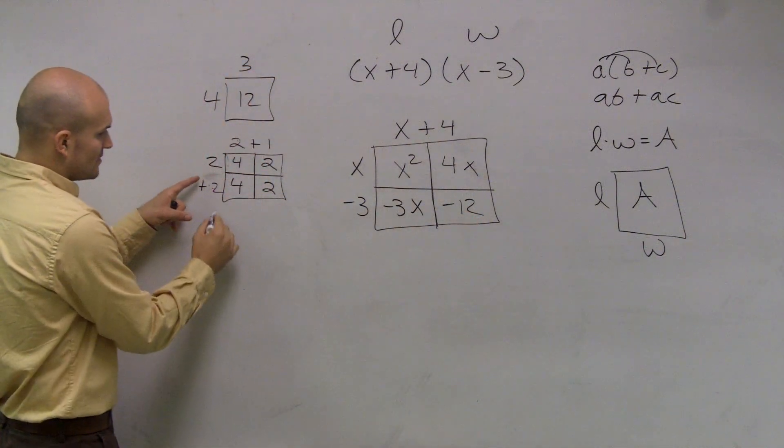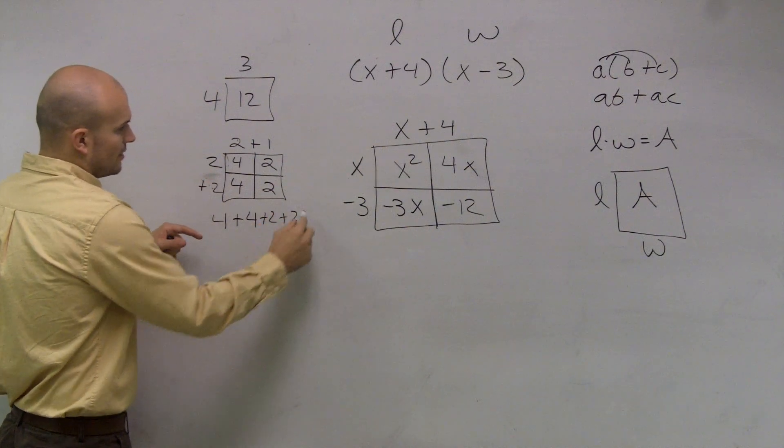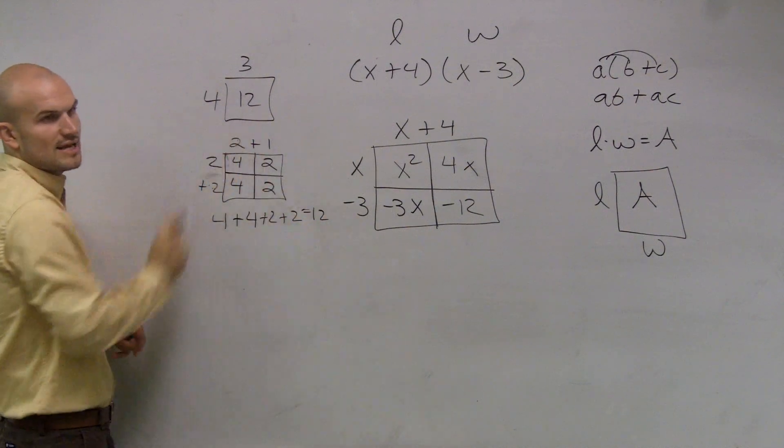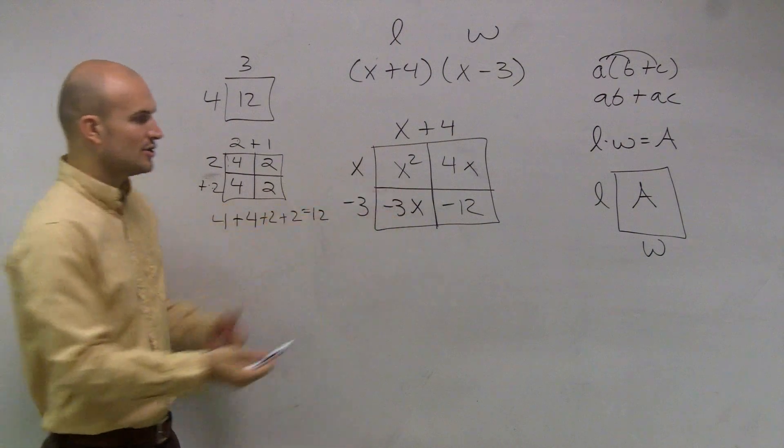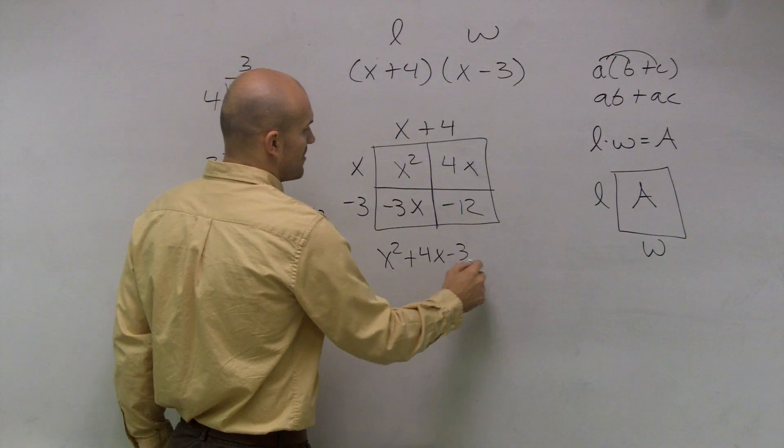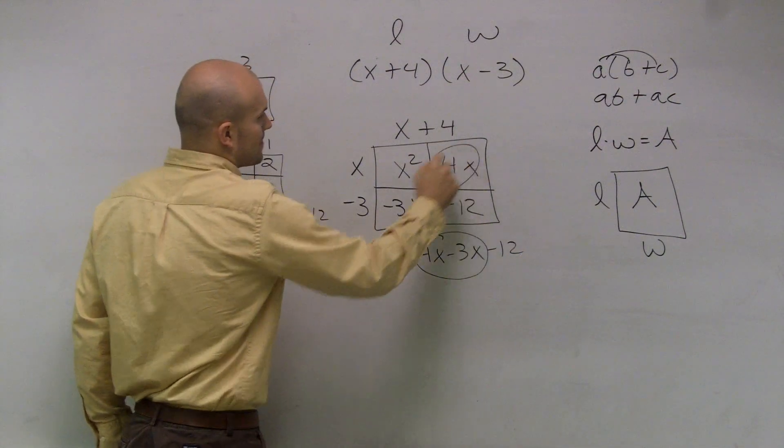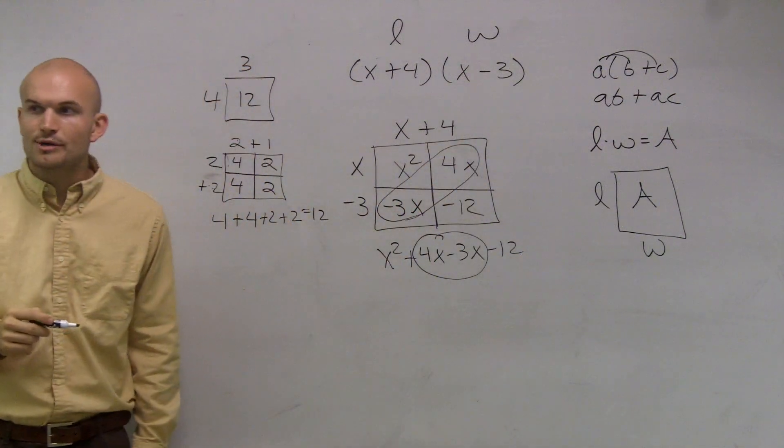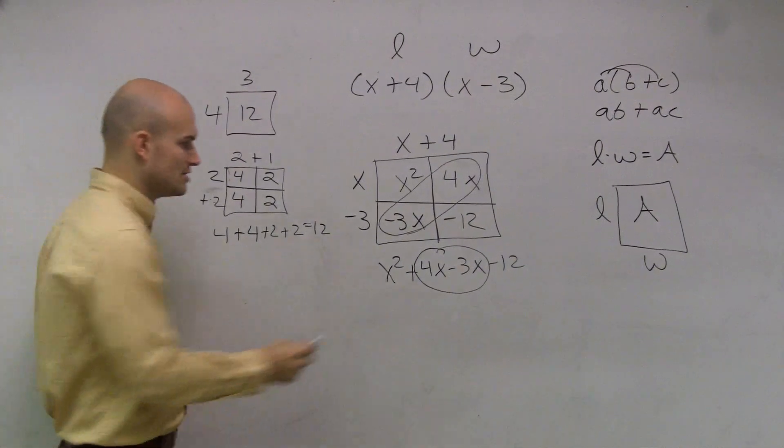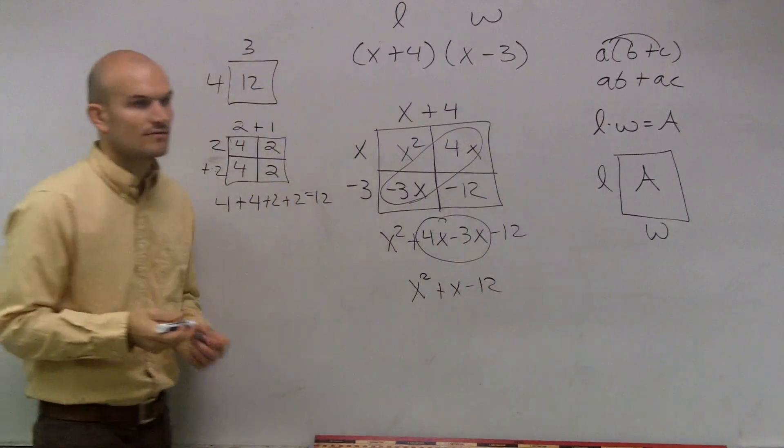And then here what I did was I added all these up. 4 plus 4 plus 2 plus 2. And that equals 12, which is the same as this. Well, here you're going to do the same thing. x squared plus 4x minus 3x minus 12. Where we notice that those two terms combine, because they're like terms, to give us x squared plus x minus 12.